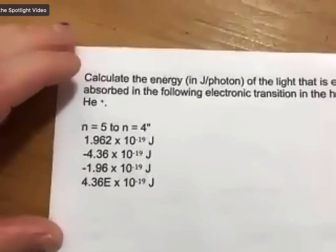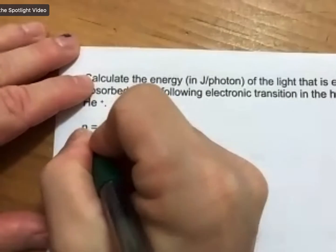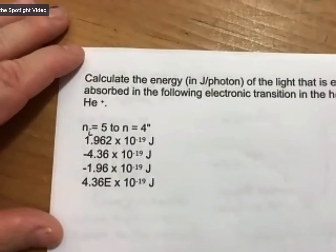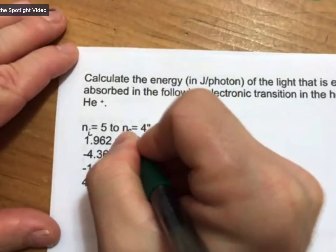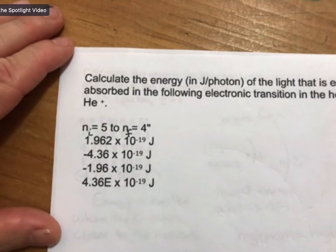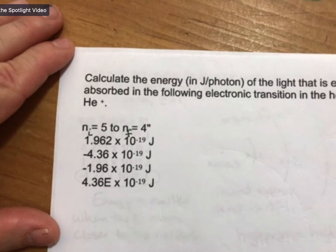So n equals 5 will be my n initial, n equals 4 will be my n final. And otherwise we're going to use the exact same equation.